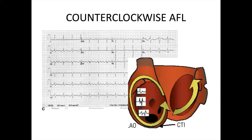Around this circuit, electricity can run in two directions. The most common is counterclockwise. There have been some debates about definitions — counterclockwise flutter is very common and some literature calls this typical flutter. If you see electricity moving in the opposite direction in a more clockwise fashion, some literature would call that reverse typical flutter. Can we tell on the EKG or ECG which kind of flutter we're dealing with?